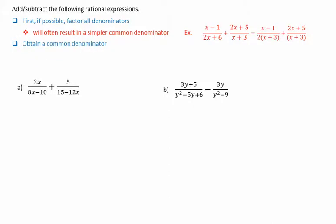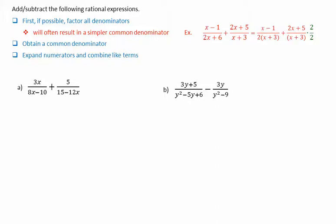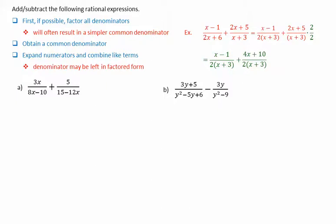We will simply have to multiply the second rational expression by 2 over 2 to obtain a common denominator. We then expand the numerators and combine like terms. The denominator may be left in factored form. The first rational expression remains unchanged: x minus 1 over 2 times x plus 3. The second one, 2 times 2x plus 5, becomes 4x plus 10. Combining like terms: x plus 4x gives 5x, and negative 1 plus 10 gives positive 9.